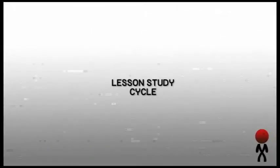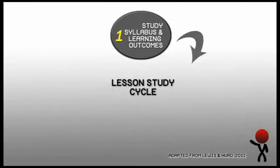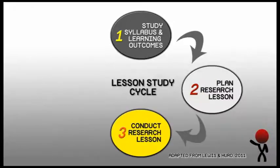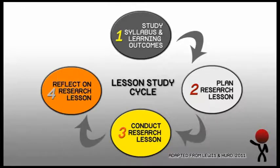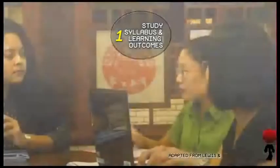The lesson study cycle comprises four processes. Teachers had to study the syllabus and identify learning outcomes, plan the research lesson collectively, conduct the research lesson, and reflect to improve on the lesson as well as to check if they had achieved the learning outcomes.